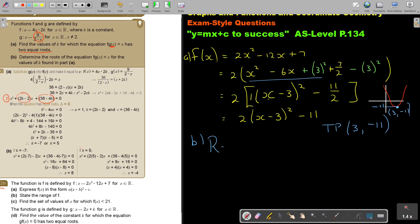So what will be the range? The range of F(x) - y is an element of real numbers. So y is bigger or equal to negative 11.